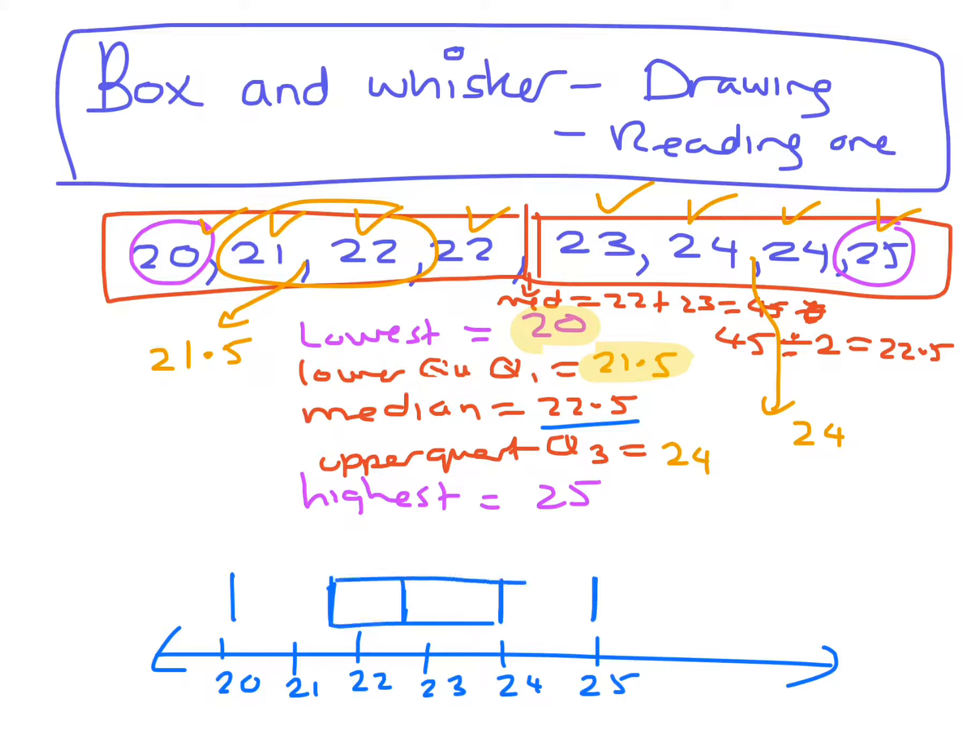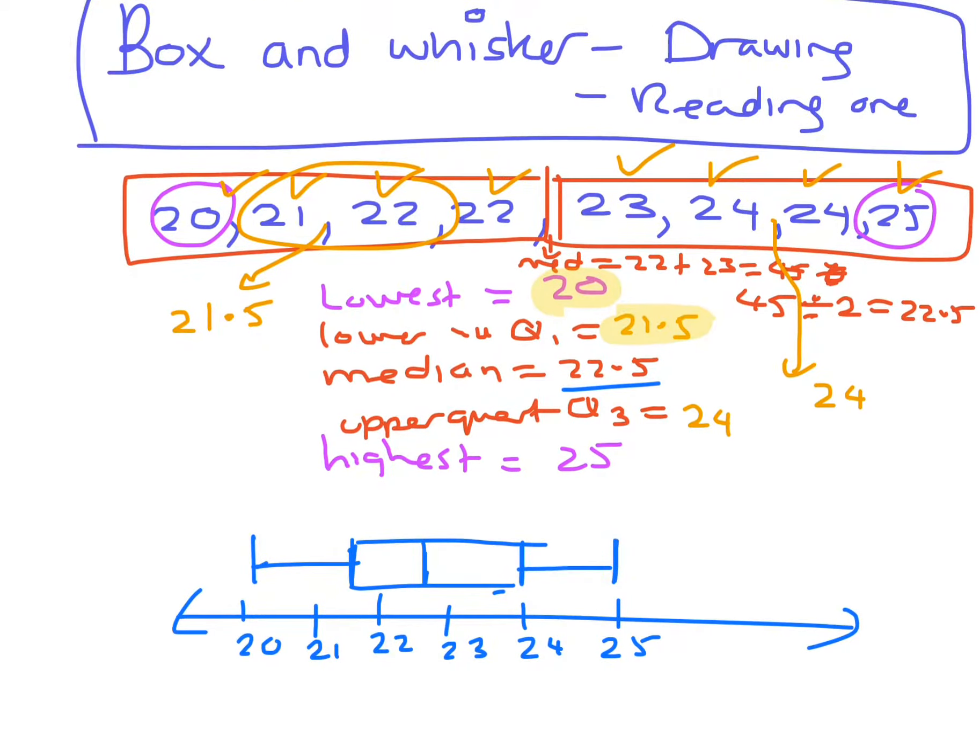Okay, you draw your box and then you've got your whisker. And there's your box and whisker plot. Now in your box and whisker plot, it's broken up into groups of 25%. 25%, 25%, 25%, 25%. And this will help with reading a box and whisker plot.